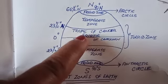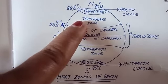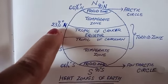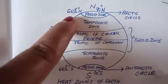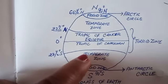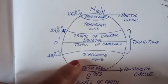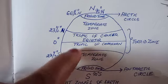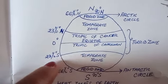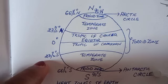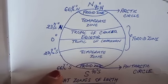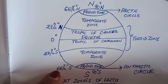Above the Tropic of Cancer at the north, the temperate zone is present, whose degree is between 23 and a half degree north to 66 and a half degree north. At the south pole, the temperate zone is again present after the Tropic of Capricorn, so its degree is 23 and a half degree south to 66 and a half degree south.